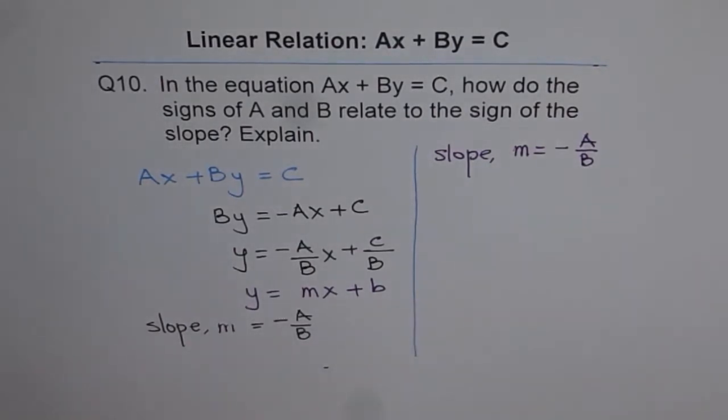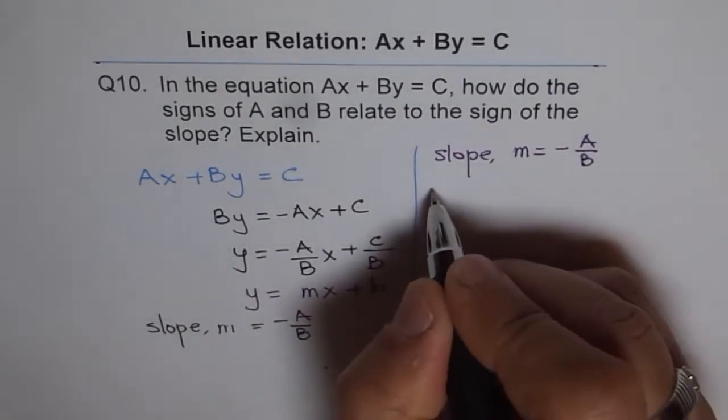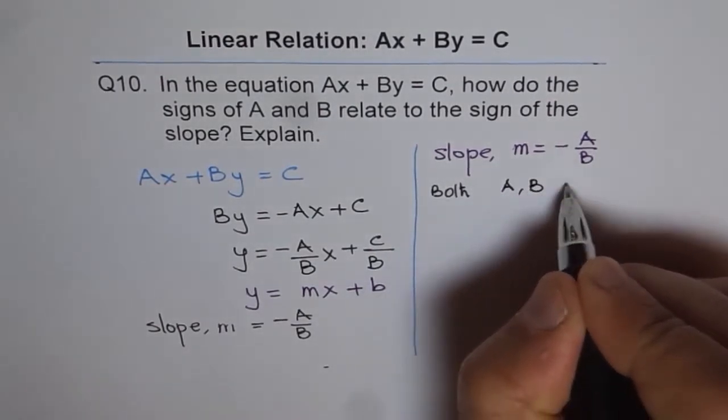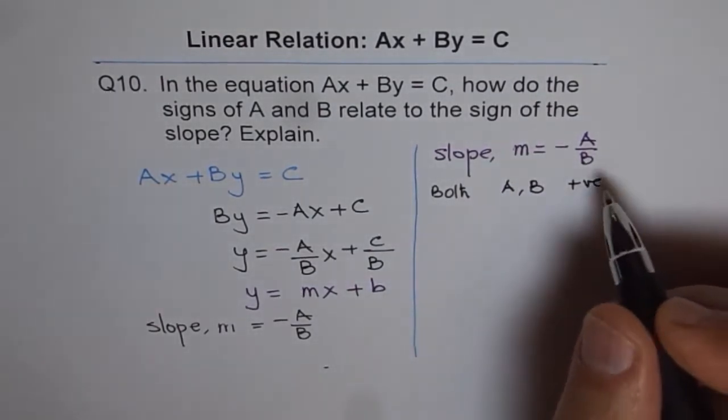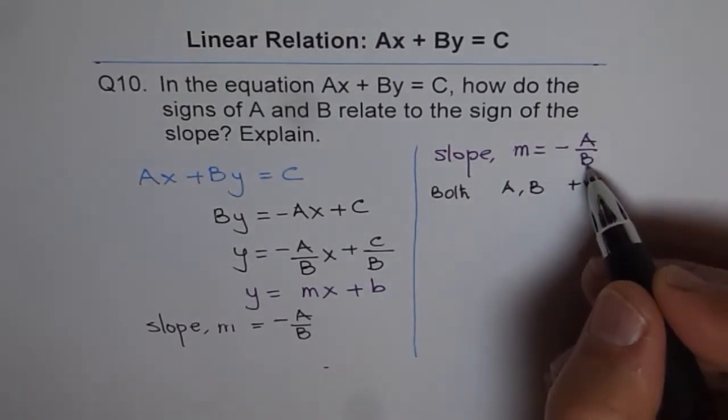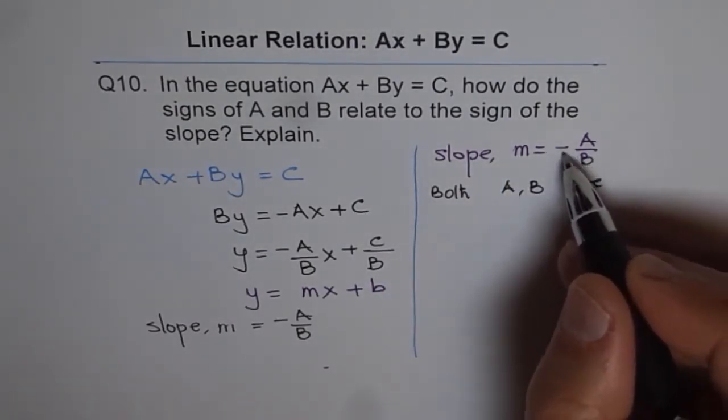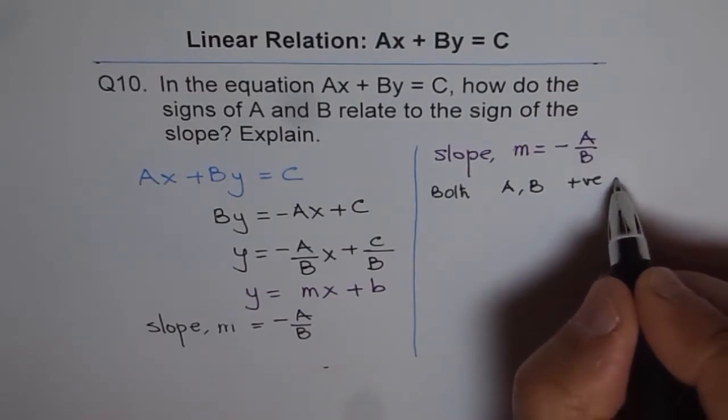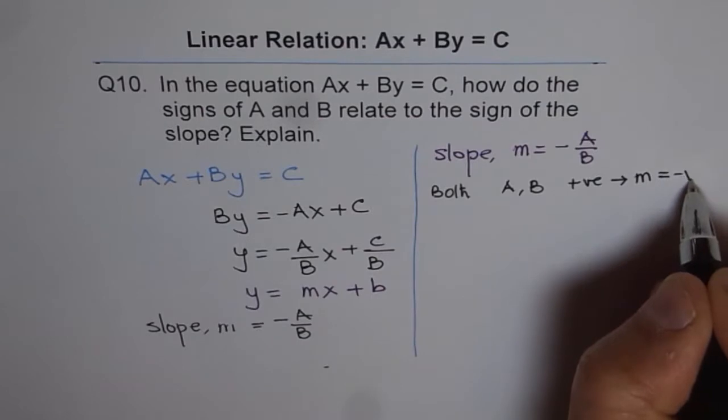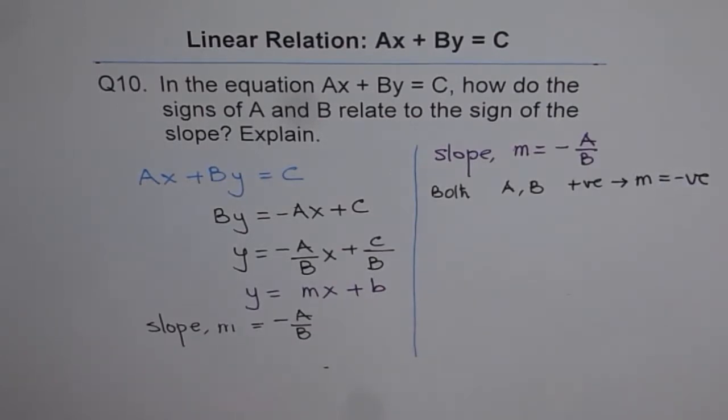Let's say the first case is that both A and B are positive. In that case, what will be the slope? Positive over positive will give us positive and we get a negative slope. So, we'll get M is negative. In this case, the slope is going to be negative.